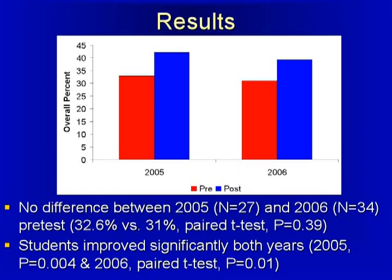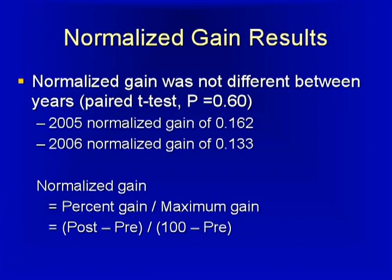But now, to compare these student response system questions — because some questions, they would have come in and only 10% of the class got right the first time, and then another question maybe 70% of the class got it right the first time — I have to take that into account. So I used what was called normalized gains. Basically, the normalized gain is just this pre versus post, the percent,